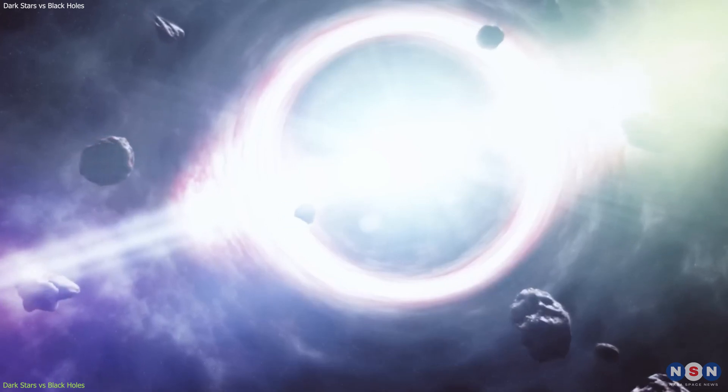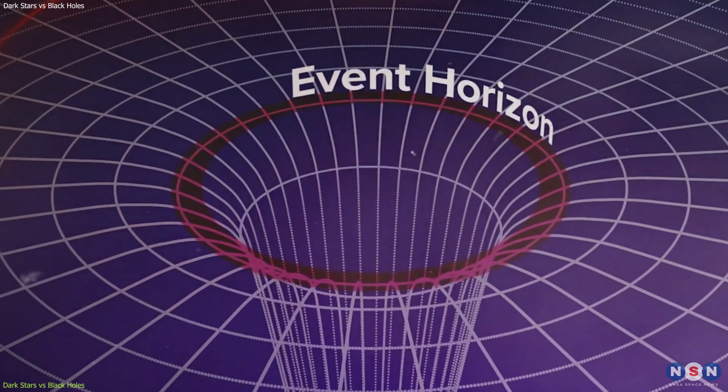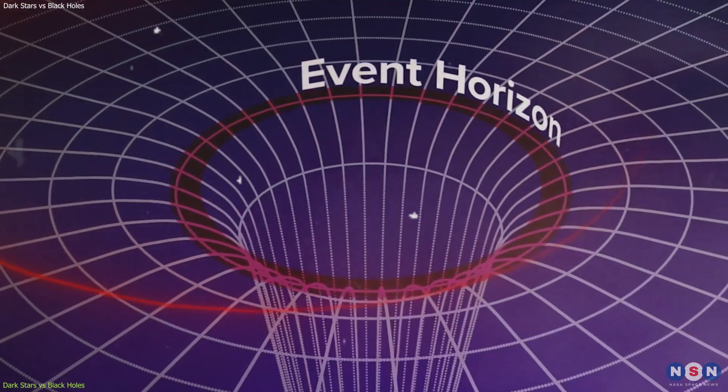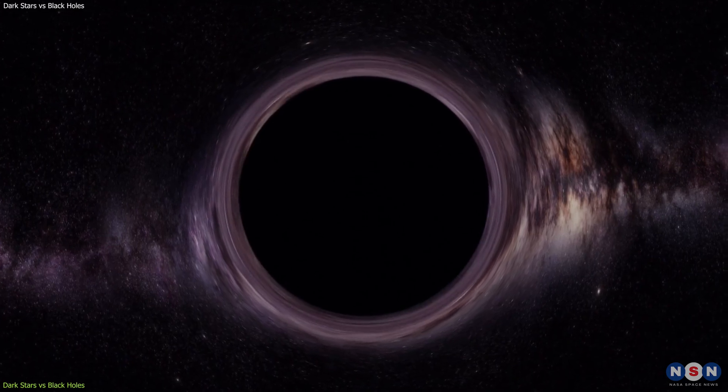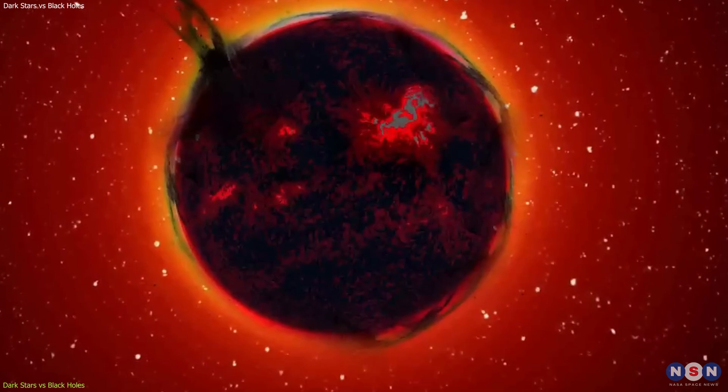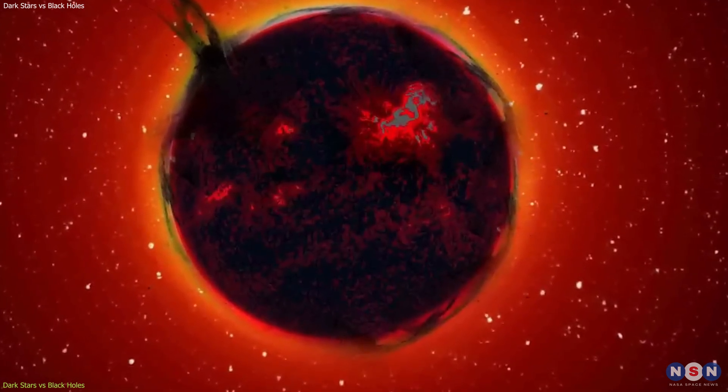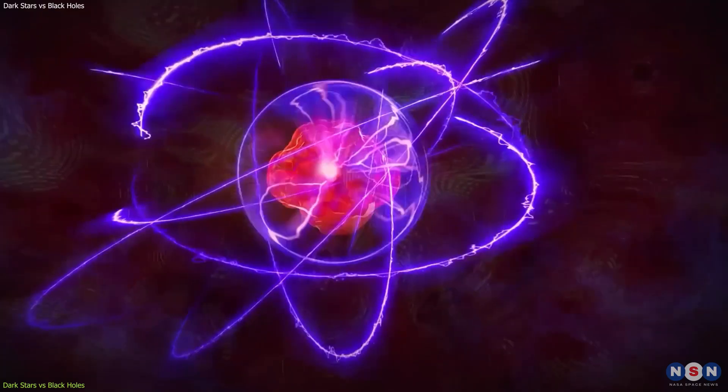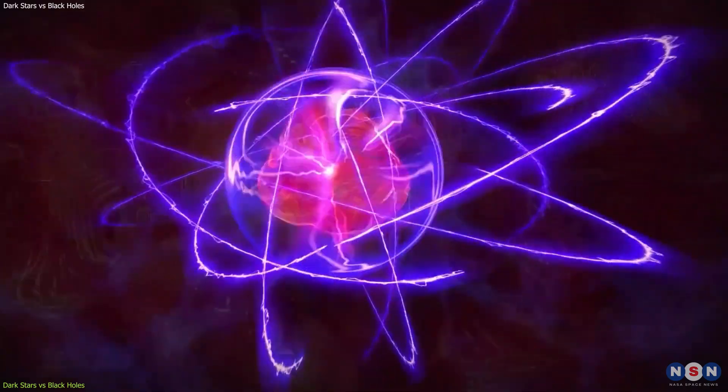The main difference is what happens at their core. A black hole has a singularity at its core, which is a point of infinite density and curvature. It is where all the laws of physics break down, and we have no idea what happens there. A dark star does not have a singularity at its core. Instead, it has a Planck core, which is a very dense core of matter that is compressed to the smallest possible scale, called the Planck length. A Planck core is where quantum effects dominate over gravity, and we have some idea what happens there.